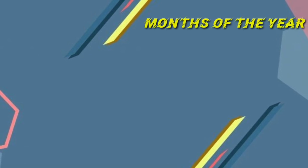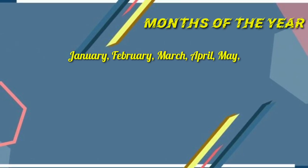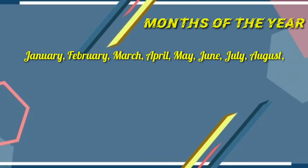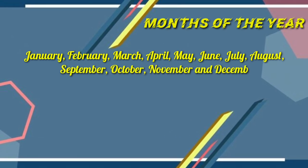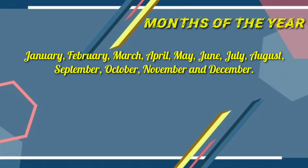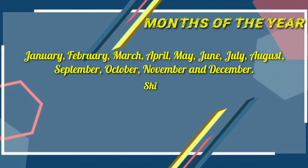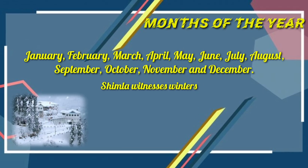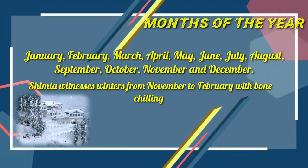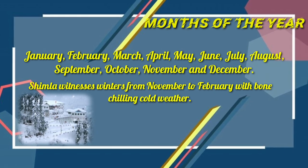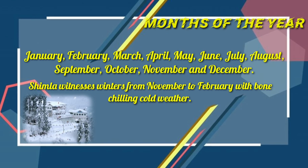Rule four: months of the year — January, February, March, April, May, June, July, August, September, October, November, and December. The first letter is always a capital letter. Example: 'Shimla experiences winters from November to February, with bone-chilling cold weather.' The months November and February both begin with capital letters.